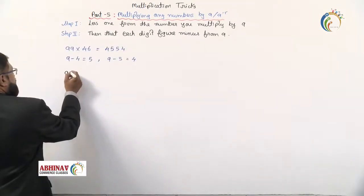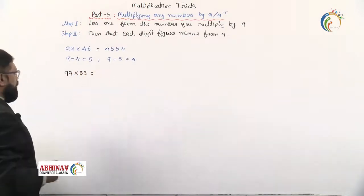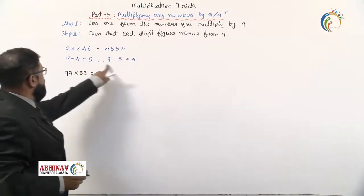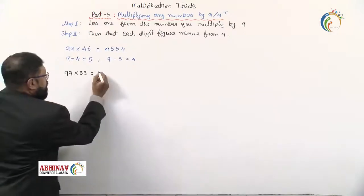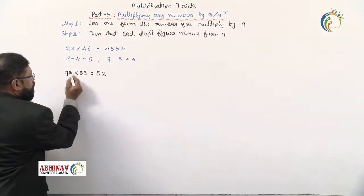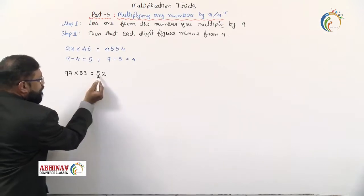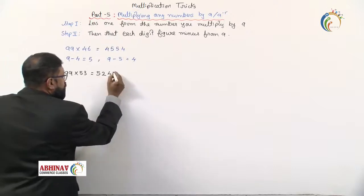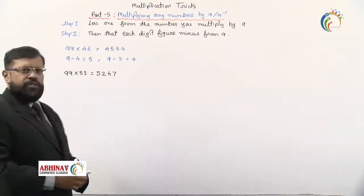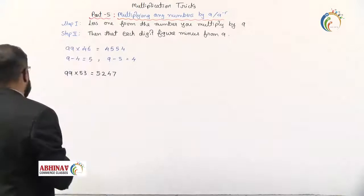Let's try 99 × 53 orally. 53 minus 1 gives 52. Now subtract each digit from 9: 9 minus 5 is 4, and 9 minus 2 is 7. So the answer is 5,247. Simple!